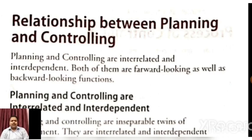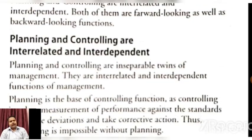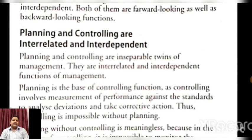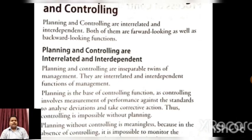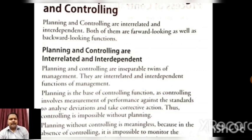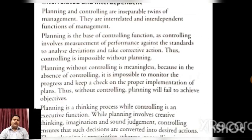Planning and controlling are interrelated and interdependent — inseparable twins of management. They are interrelated and interdependent functions of management. Planning is the base of the controlling function, as controlling involves measurement of performance against the standard to analyze deviation and take corrective action. Thus controlling is impossible without planning — क्योंकि controlling में हम performance measure करते हैं, standard decide करते हैं, deviation analyze करते हैं और corrective action लेते हैं। Planning ही हमें बताता है कि हमारा standard क्या है, हमारी objective क्या है। And planning without controlling is meaningless.